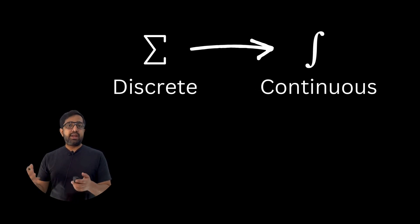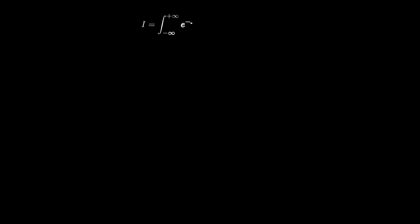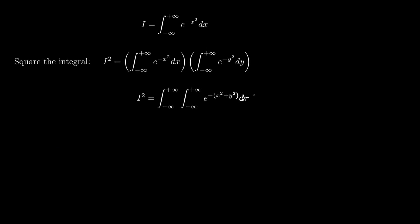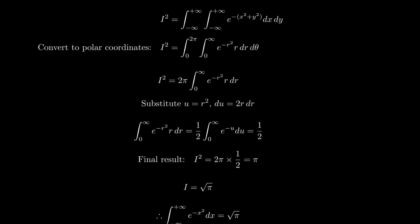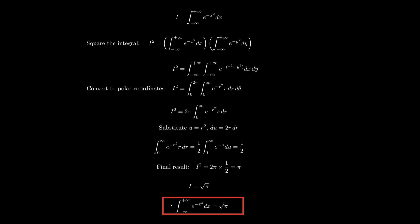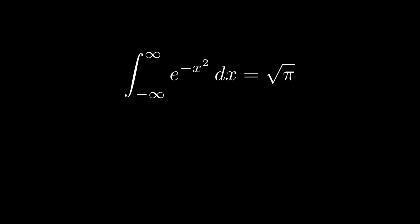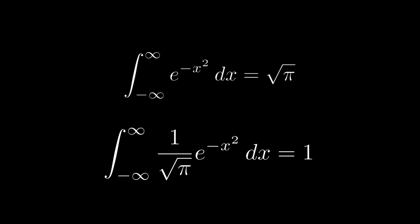In mathematics, summation for discrete cases becomes integration — we all know that. And when you integrate e^(-x²), the result is not 1. Here is the proof: it actually equals the square root of π. So you would say that the integral of (1/√π) · e^(-x²) must equal 1.